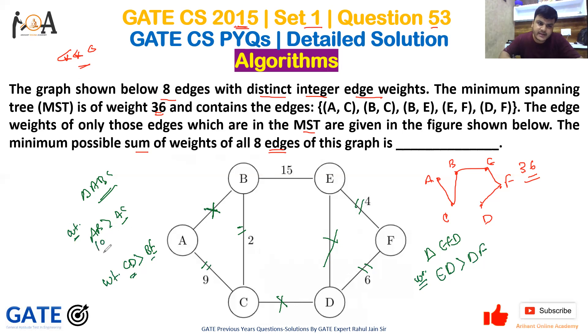So the minimum possible value of A-B should be 10, because all edges are distinct and 9 is already given to us. Since all edges have distinct integer weights, we can assume A-B should be 10.